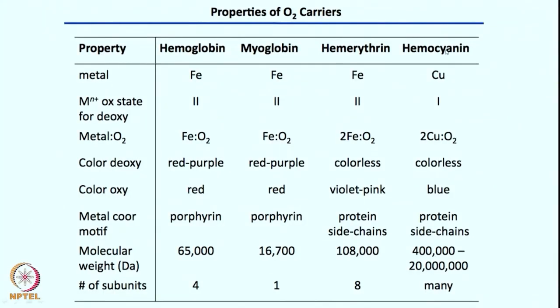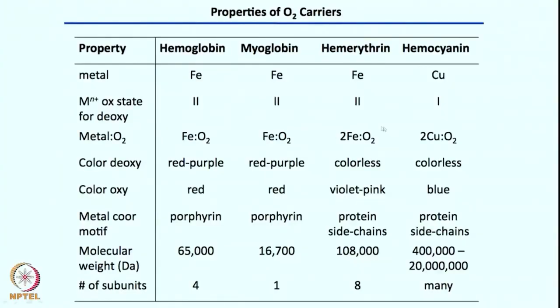Just to note, hemerythrin has two iron centers which can bind and transport oxygen. Importantly, in none of these cases does oxygen remain simply as O2. In some books it may be written as O2, but that is not correct. The iron-oxygen species interact to give species such as hydroperoxo, peroxo, or superoxo, as you will see.